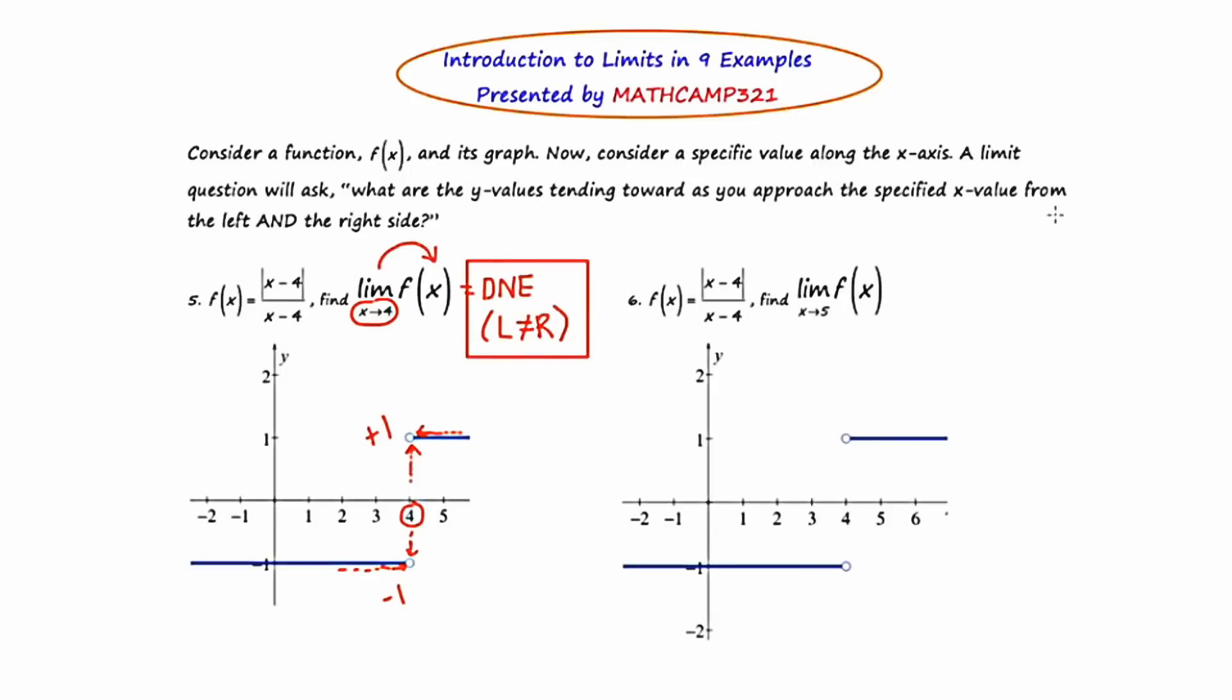Moving to example six, we have Jesse's giant step again. It's in fact, the same exact graph as it was in question five. What has changed, though, is the limit question. This says find the limit of f(x) as x approaches five. So x approaching five is going to reveal to us where along the x-axis we need to look.